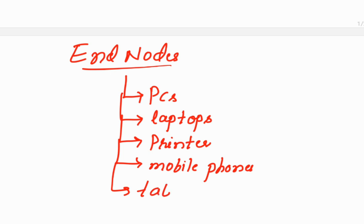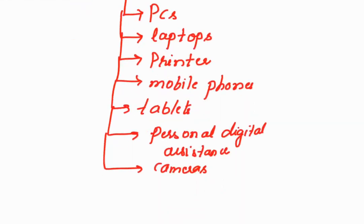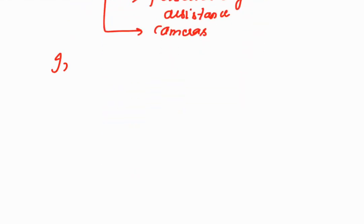End nodes also include tablets, personal digital assistants, and cameras. Basically, devices which are either sending data or accepting data become the end devices in the network.